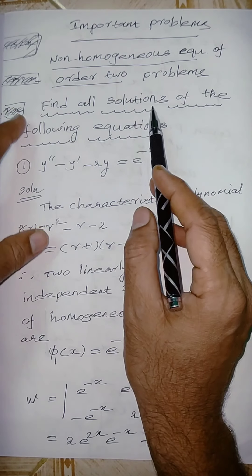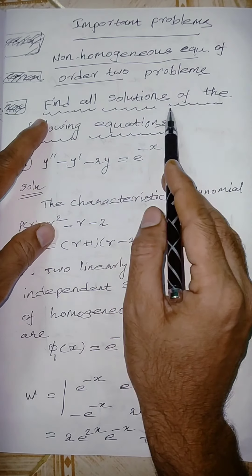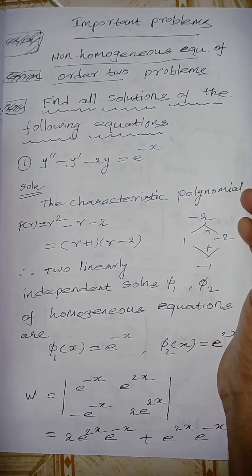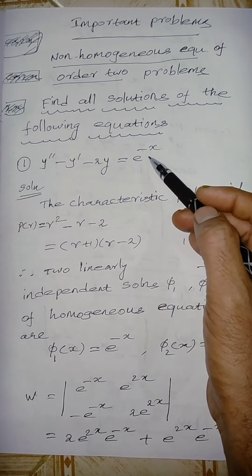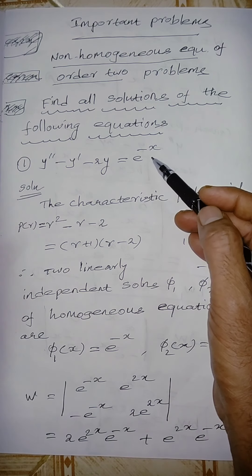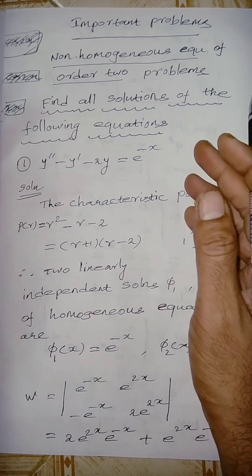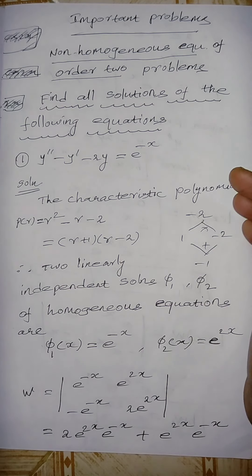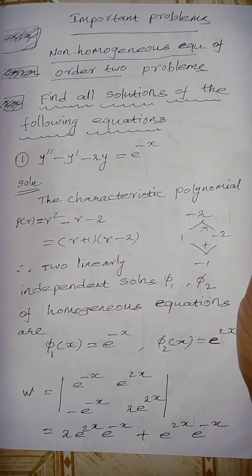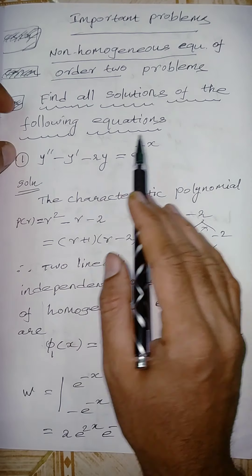The question asks: find all the solutions of the following equation. The given problem is a non-homogeneous second-order differential equation. We need to find all solutions — that is, the characteristic polynomial, the particular solution, and finally the general solution.